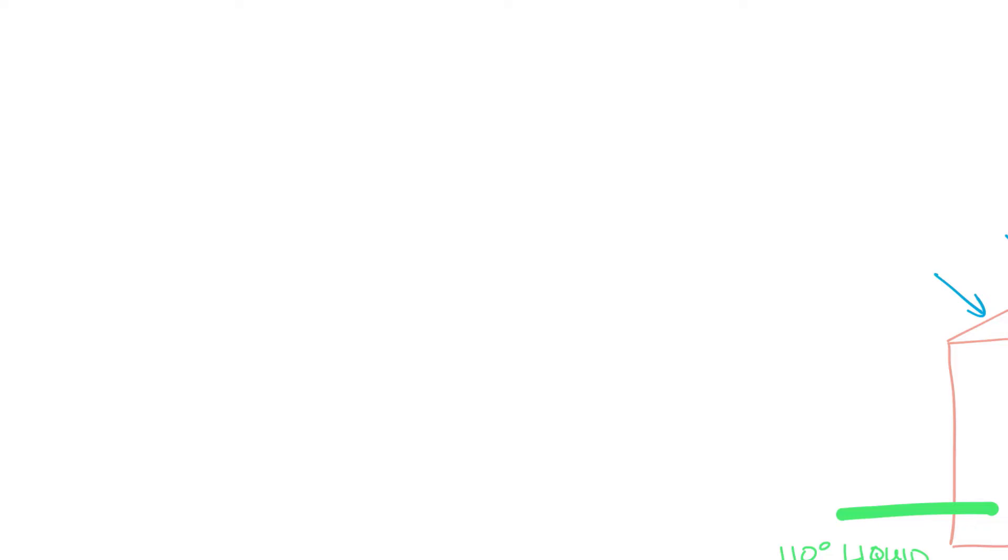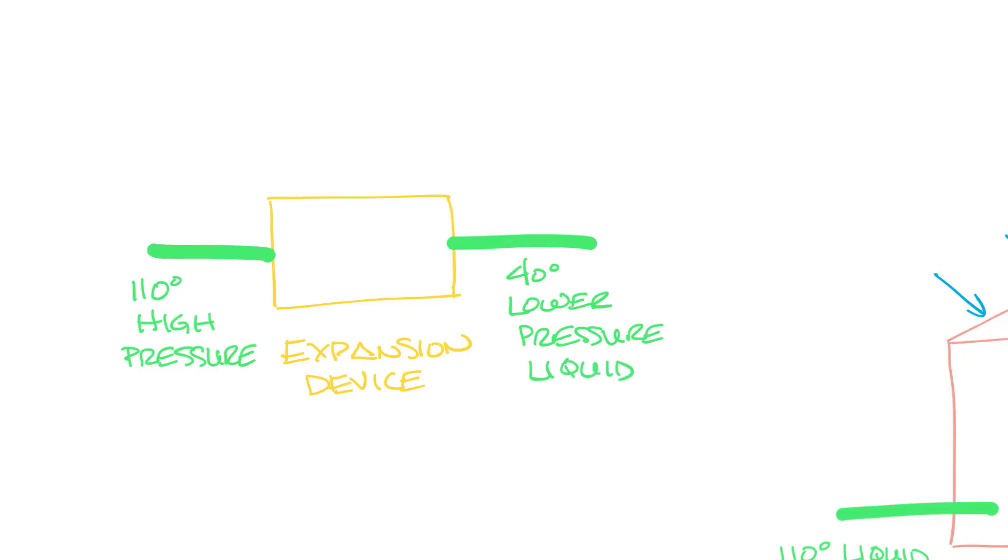So let's draw a little expansion device. And let's draw our refrigeration lines in and out. The expansion device reduces the pressure and temperature of the refrigerant back to where it needs to be to enter the evaporator again. So it's coming in at, say, 110 degree high pressure liquid, goes through the device, and it comes out at 40 degree lower pressure liquid.